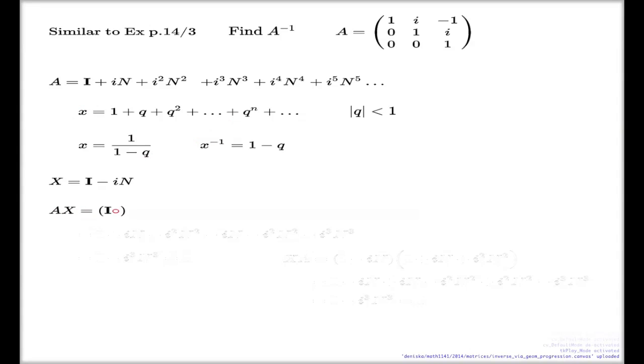If by any chance this product will return identity, that will be enough evidence to conclude that x, my chosen x the way I chose it, is the inverse of A. Let's just test this product.